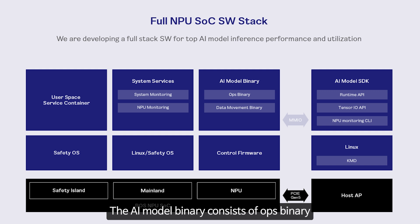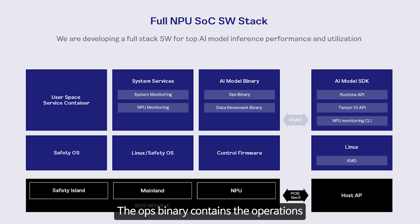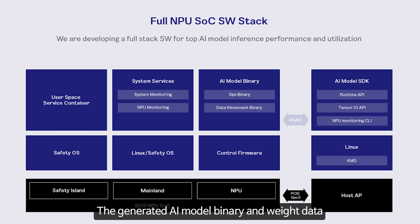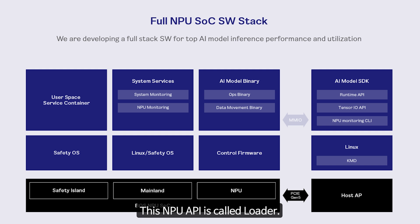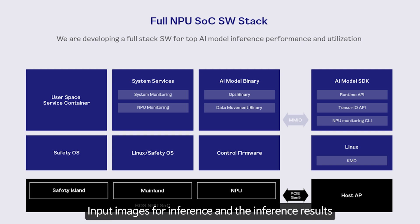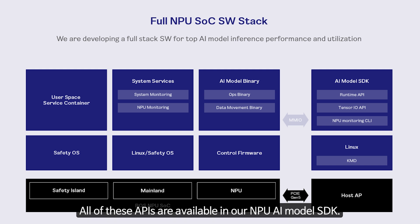The AI model binary consists of an ops binary and a data movement binary. The ops binary contains the operations essential for executing AI model tasks, and the data movement binary handles efficient data movement. The generated AI model binary and weights data are loaded onto the MPU by the runtime API, called the loader, which runs on the host side. Input images for inference and inference results are delivered and collected using tensor IO APIs.